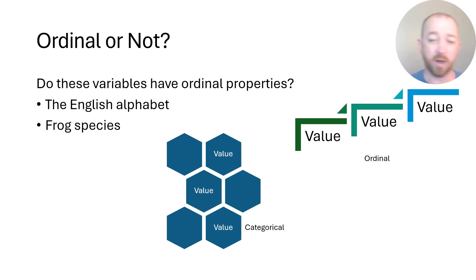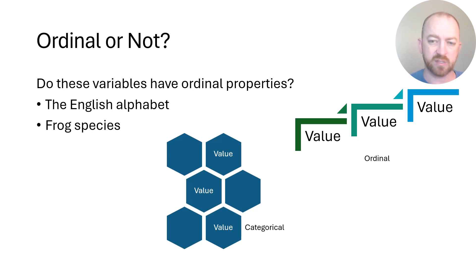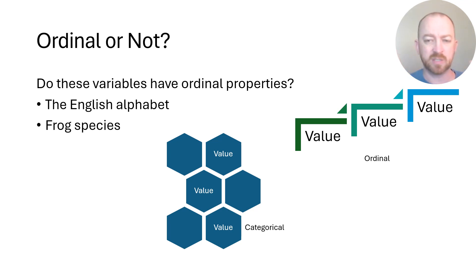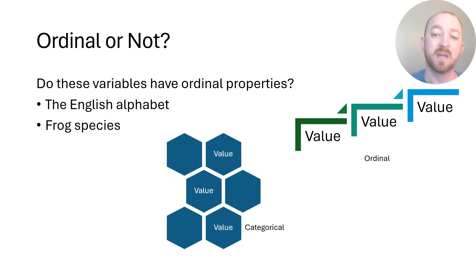What about frog species? It would depend on what you're doing with the research. Unless you're specifically interested in which species came chronologically before another, there's really no difference — you're probably using species merely to distinguish among the different kinds of frogs. So I think frog species would be inherently categorical data and nothing beyond that, depending on how you're using it.